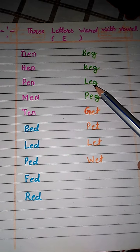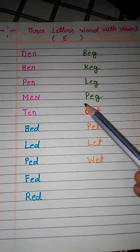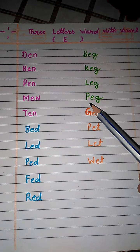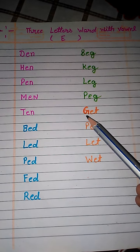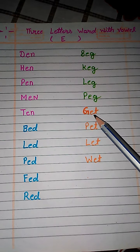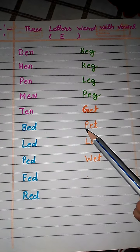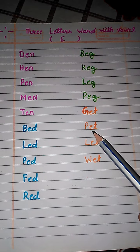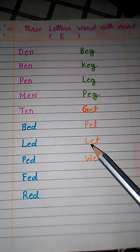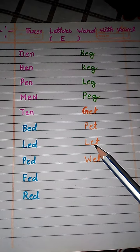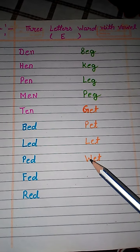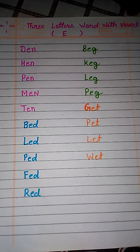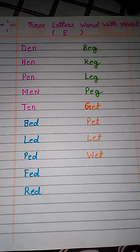L, E, G — leg. P, E, G — peg. G, E, T — get. P, E, T — pet. L, E, T — let. V, E, T — vet. Thank you for watching this video.